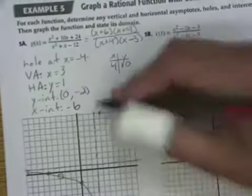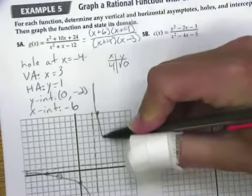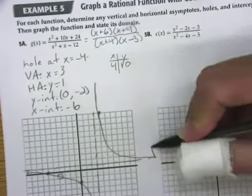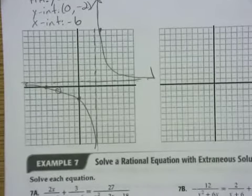So, 4, 10 is way up here. And that probably tells me all I need to know about how my graph is going to look. It's going to be hugging here to here.